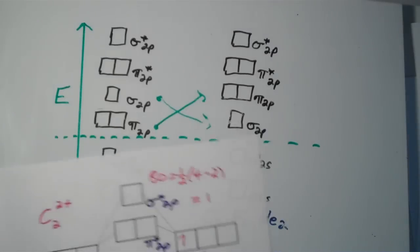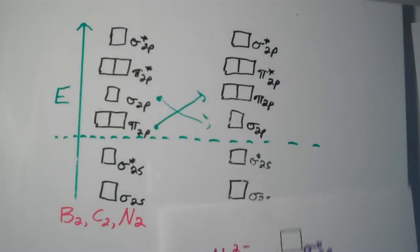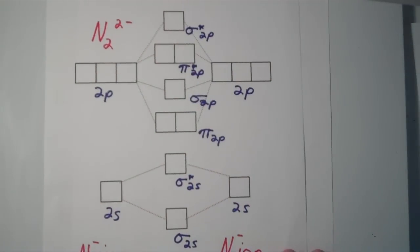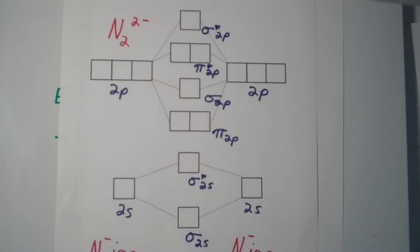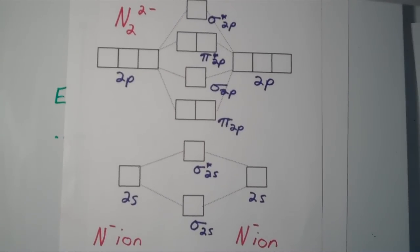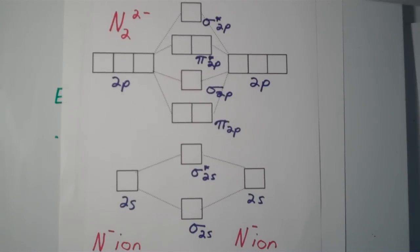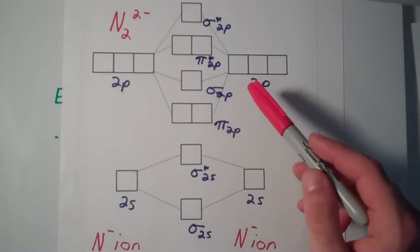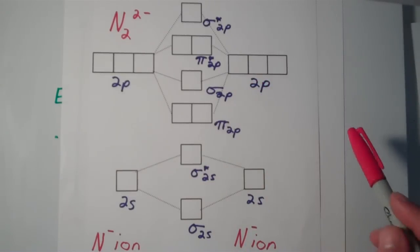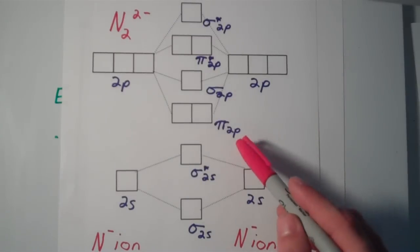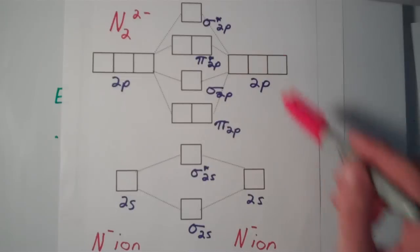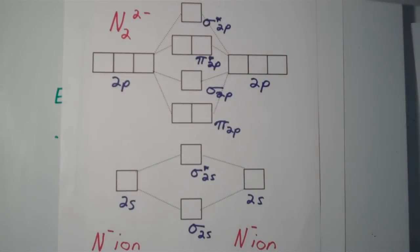Let's move on to another one: the N2²⁻ ion — diatomic nitrogen with two extra electrons. Notice the energy ordering of the sigma and pi orbitals is the same as in the C2²⁺ problem: pi 2p, sigma 2p, pi* 2p, sigma* 2p. That is the correct energy ordering for boron, carbon, and nitrogen.